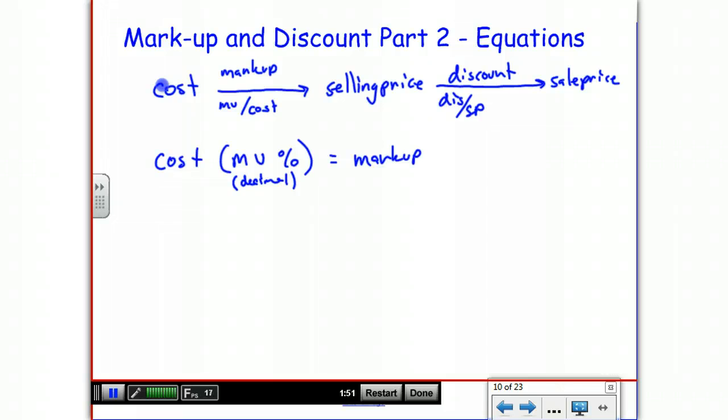So if you have an $80 item and it's a 25% markup, then you multiply 0.25 times 80, and you get 20, and that's the actual markup.